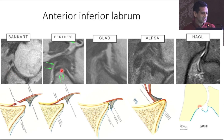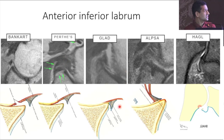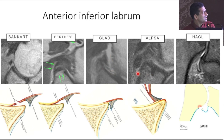You can see a Perthes lesion where the periosteum is stripped but the labral tissue remains in the same place. You can see a GLAD lesion — the happy one over here — where you can see there is cartilage loss, with cartilage coming off. And in this you can see an ALPSA lesion, where that periosteum is stripped and the labrum is buckled between the bone and the periosteum.